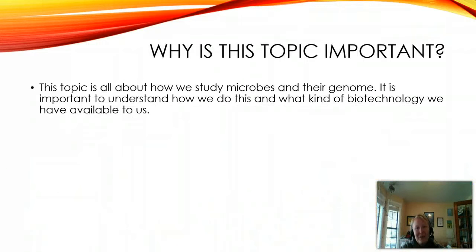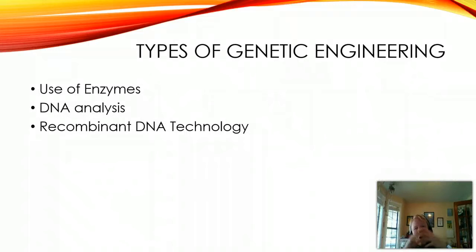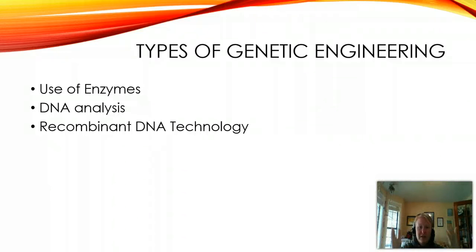So why is this topic important? This is all about how we actually study microbes and their genomes. This is what we do in microbiology labs around the country. This is also how we can use these cells to manipulate them in biotechnology ways to produce desired outcomes. While there's a whole range of genetic engineering out there, being that this is an introductory microbiology class, we're only covering three types: the use of enzymes, DNA analysis, and recombinant DNA technology. Those are the only three we're going to worry about here. When you take other classes you'll learn about all sorts of other techniques, but these are just the three cornerstone techniques that we use in micro.